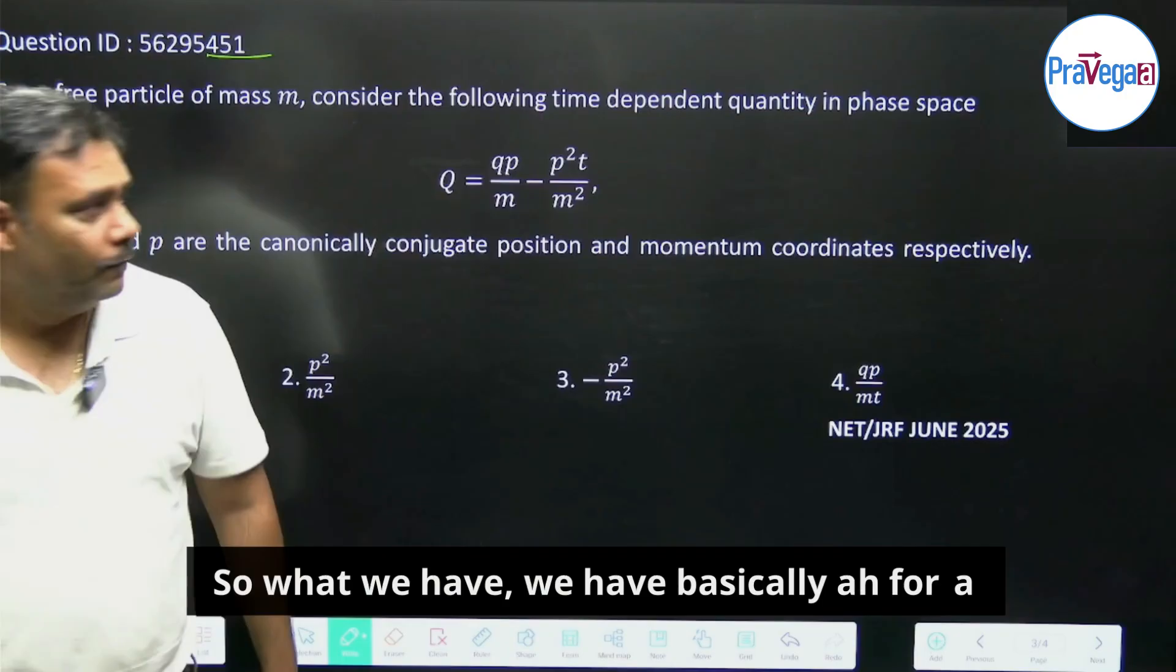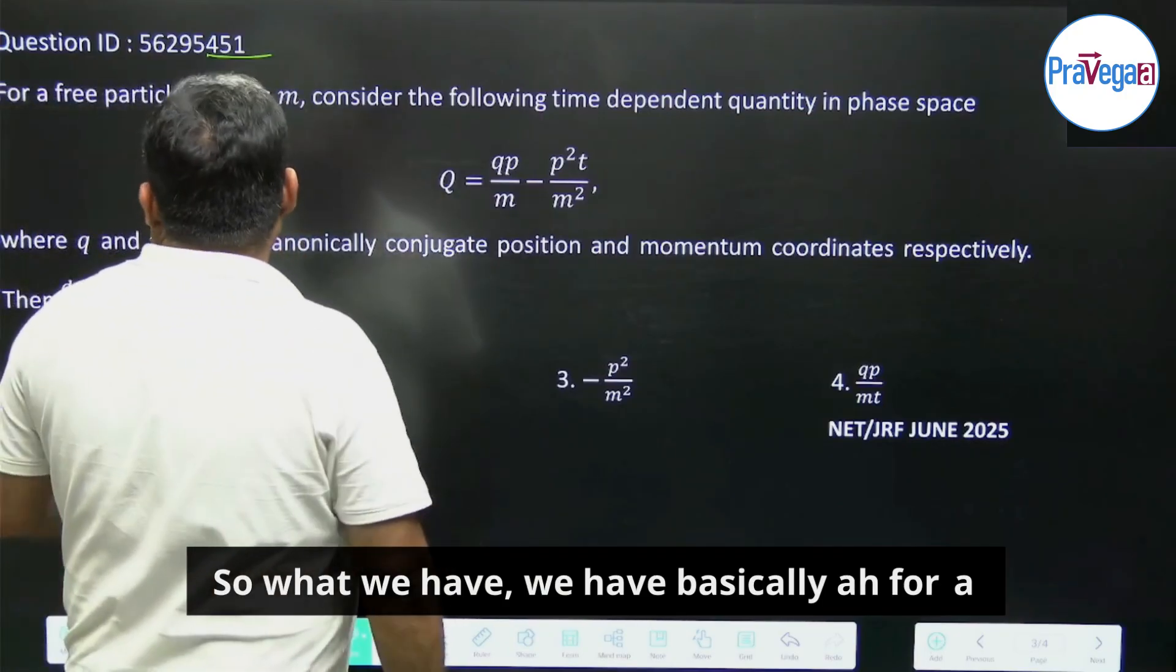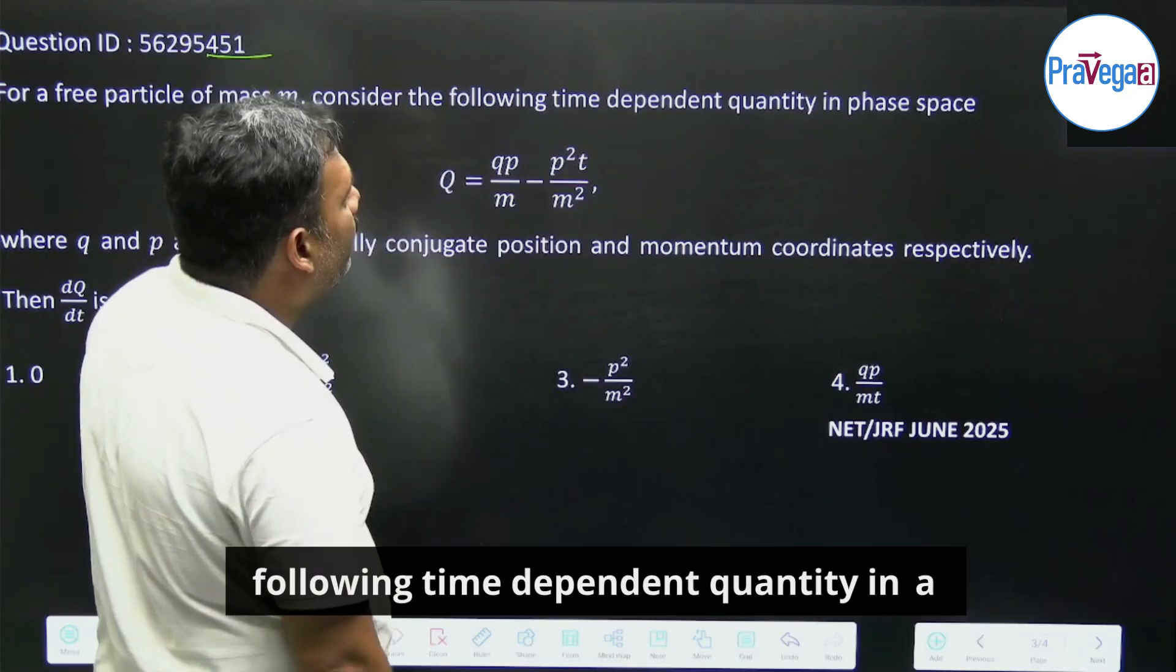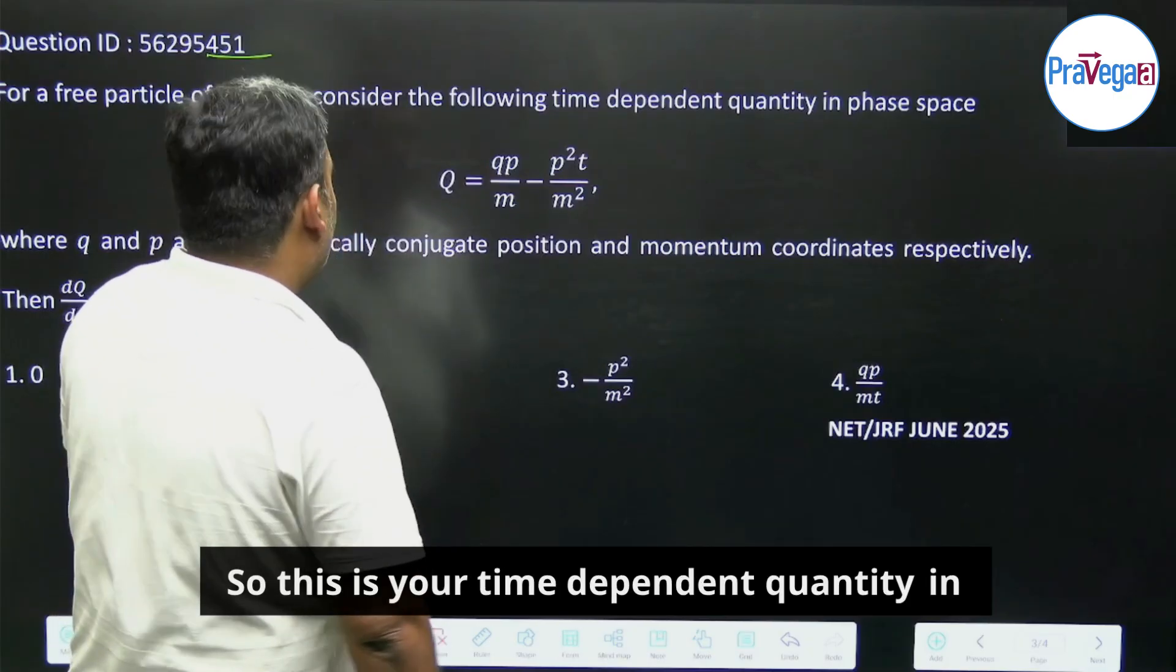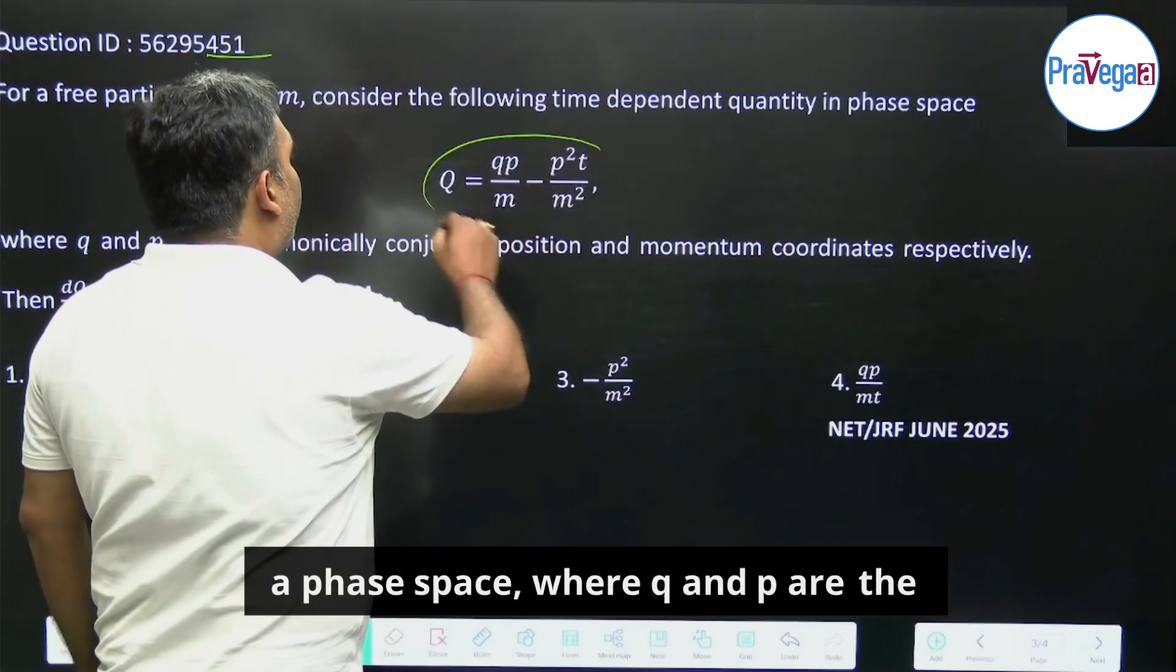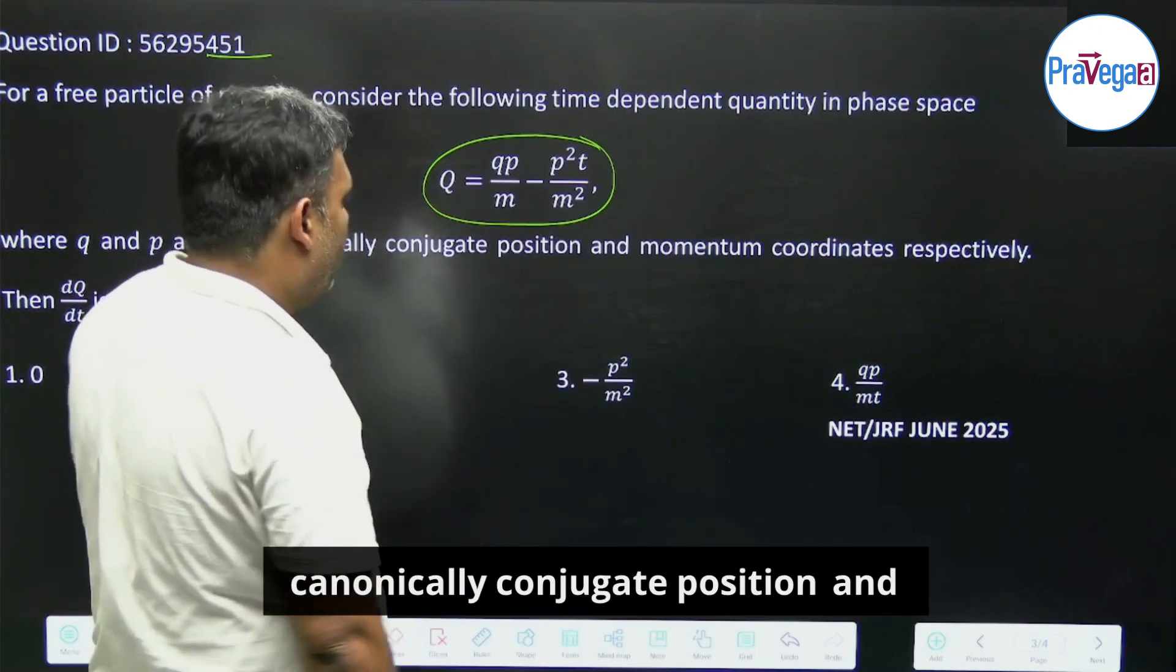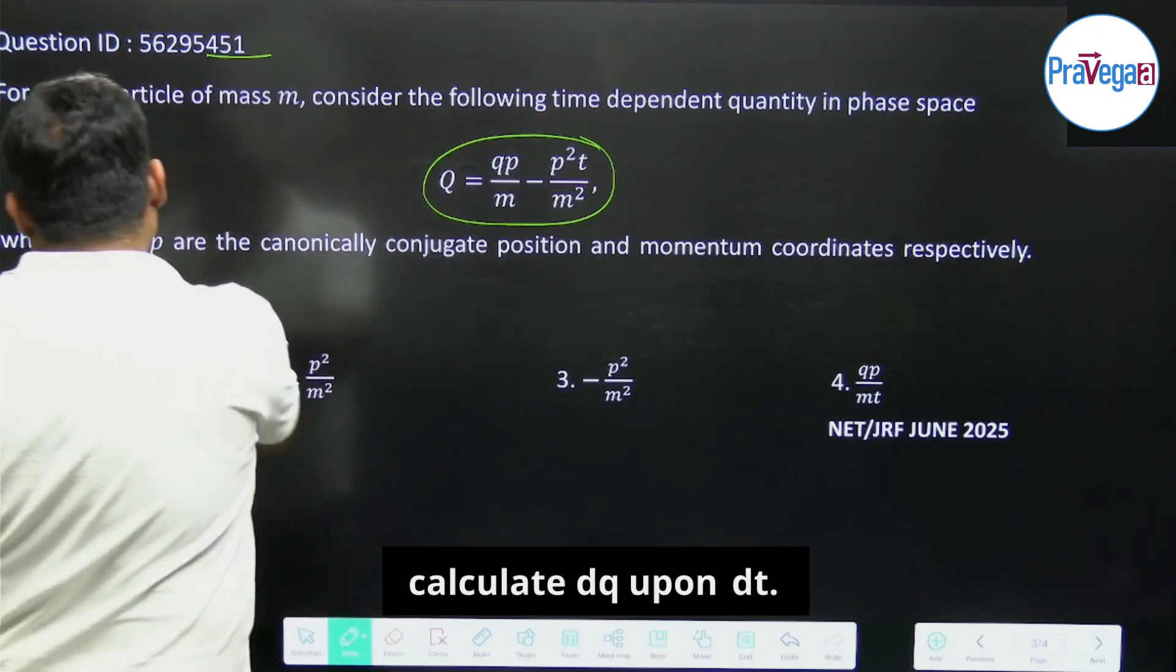For a free particle of mass m, consider the following time dependent quantity in phase space, where q and p are the canonically conjugate position and momentum coordinates respectively. Then you have to calculate dQ upon dt.